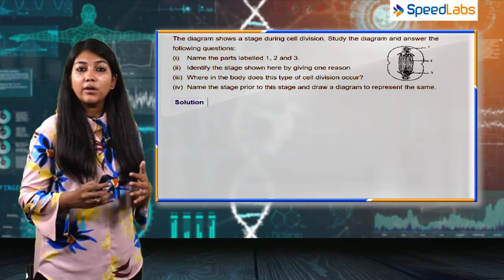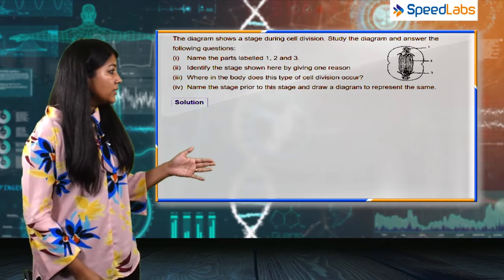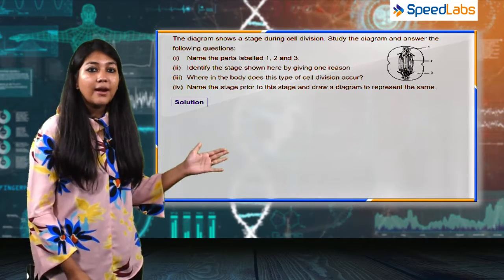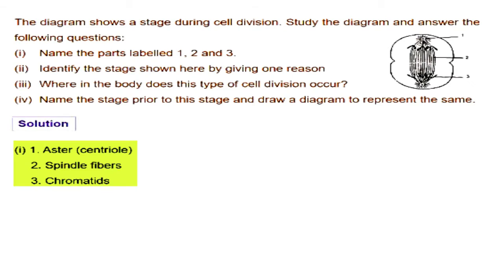This question is demanding a thorough knowledge of cell division. The first part asks to name the parts labeled 1, 2, and 3. The first part is the aster, the fibers formed by the centrioles. The second is the spindle fibers, and the third one are the chromatids.